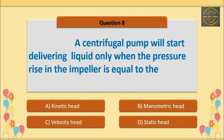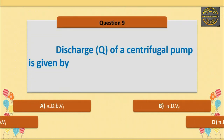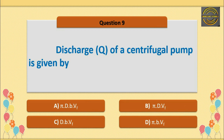Q8. A centrifugal pump will start delivering liquid only when the pressure rise in the impeller is equal to the — option B is correct — manometric head. Q9. Discharge Q of a centrifugal pump is given by — option A is correct — π D B × V_F.